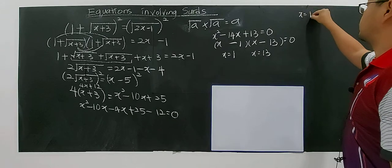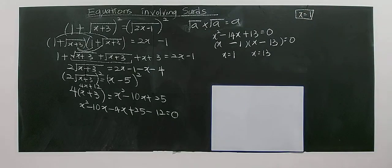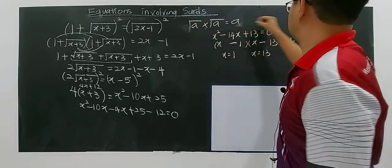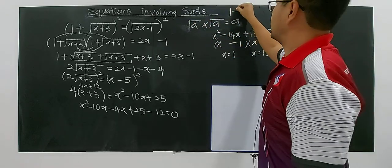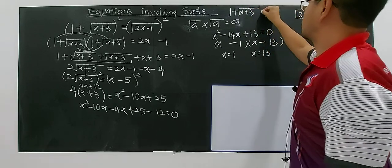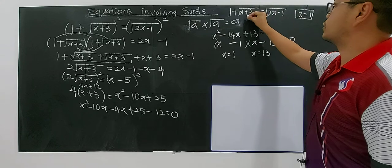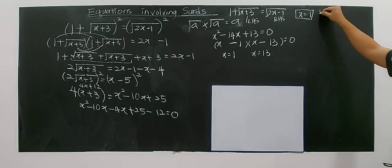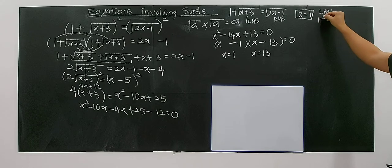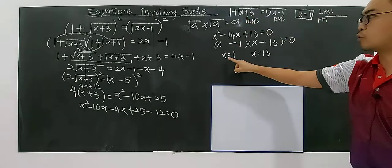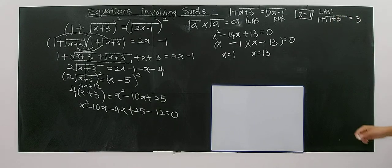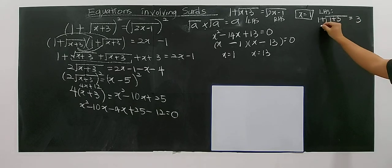Let me show you the checking. For x equals to 1, you substitute into both sides. The original equation is 1 plus square root of x plus 3 equals square root of 2x minus 1. So for the left hand side: 1 plus square root of 1 plus 3 equals 1 plus square root of 4 equals 1 plus 2 equals 3.